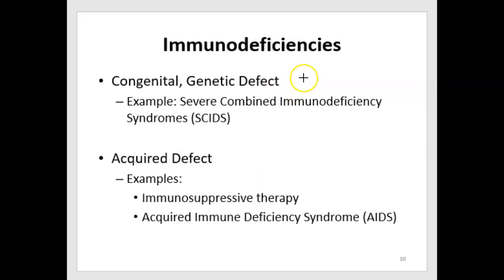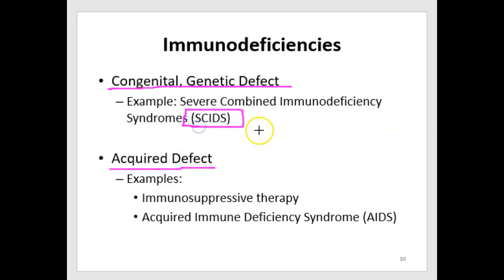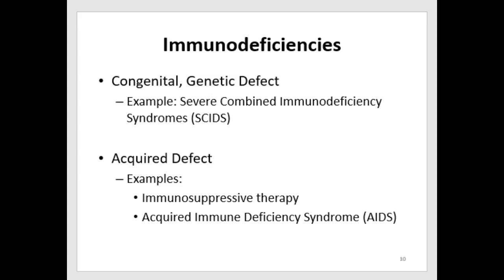Now let's talk about immunodeficiencies, which might be congenital — a genetic defect you're born with — or acquired. An example of a congenital immunodeficiency is Severe Combined Immunodeficiency Syndrome, SCIDS. SCIDS is now understood to be not one particular syndrome but many, though originally it was identified as just one disorder. I'll talk about SCIDS first, then come back to the acquired example.